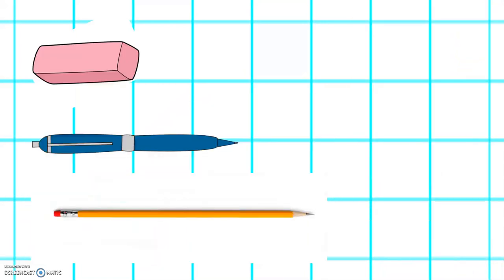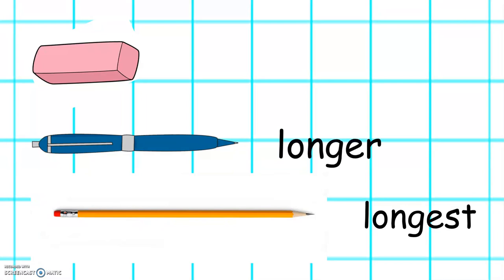We can also use some words to describe length. The pencil is the longest. The pen is longer than the eraser. The eraser is the shortest.